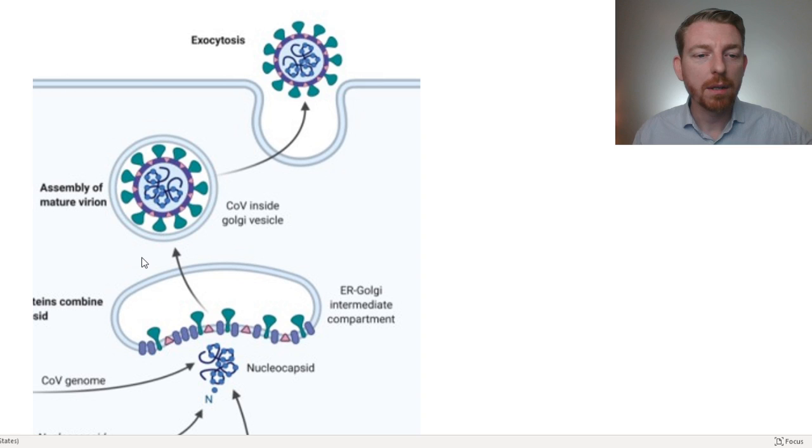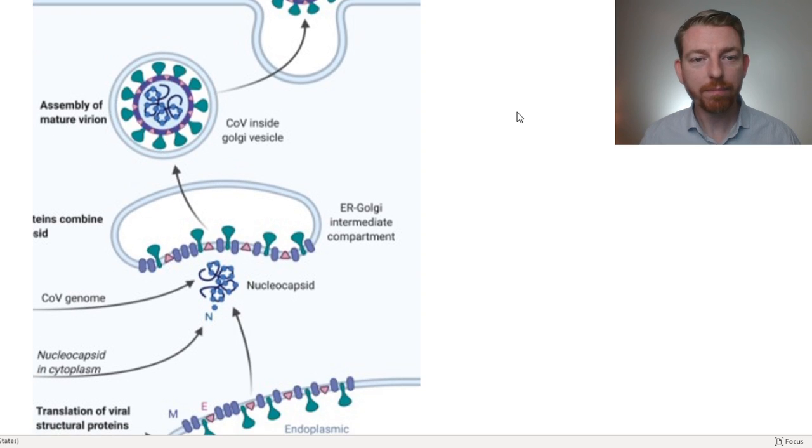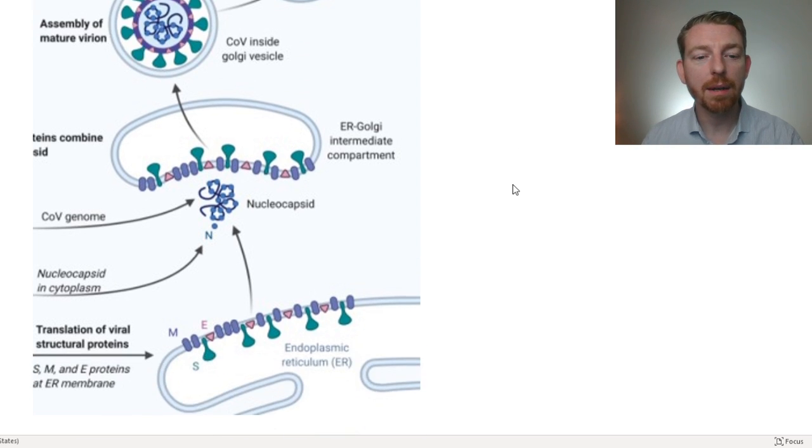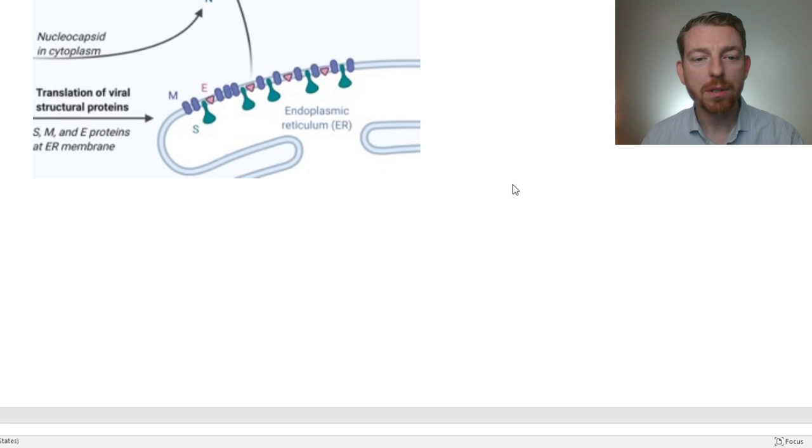So when it's packaged up and released from the cell to go infect other cells or to go infect other people, the envelope that it's used to produce its own structure, that's us, that's our cellular membranes. So that's how the virus is going to use our phospholipid membranes in exactly the same way that we do and for the same purpose. So that's it for lipids.